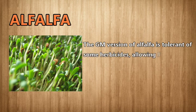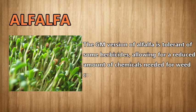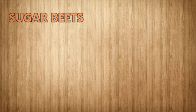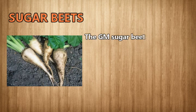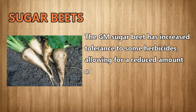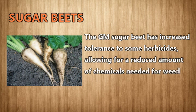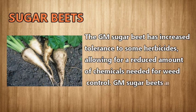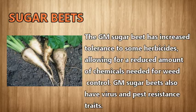Alfalfa: the GM version of alfalfa is tolerant of some herbicides, allowing for a reduced amount of chemicals needed for weed control. Sugar beets: GM sugar beets have increased tolerance to some herbicides, allowing for a reduced amount of chemicals needed for weed control. GM sugar beets also have virus and pest resistance traits.